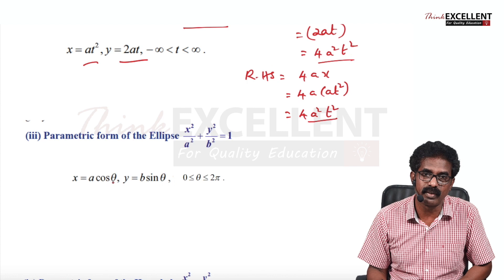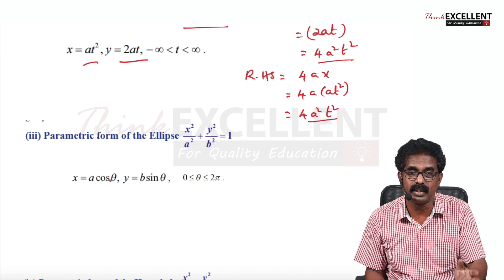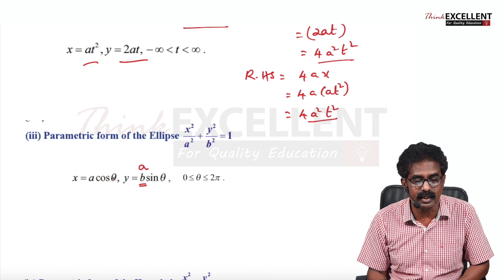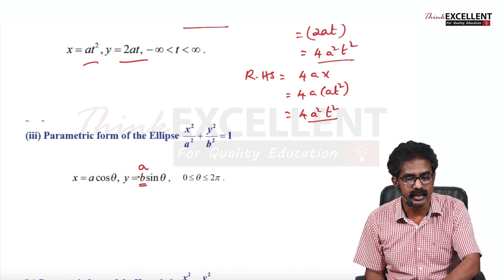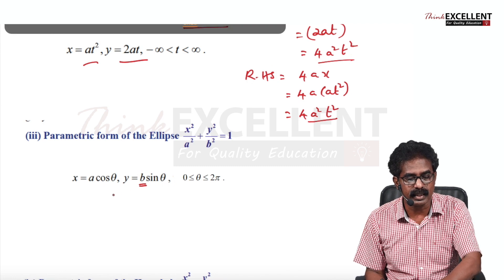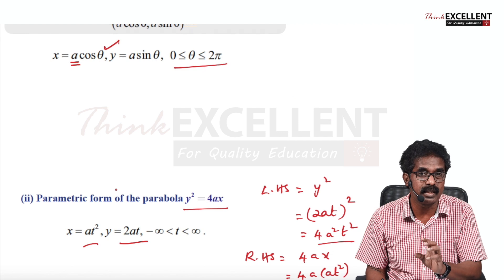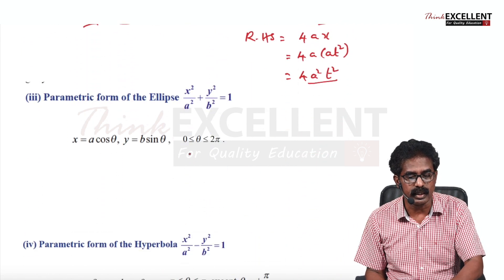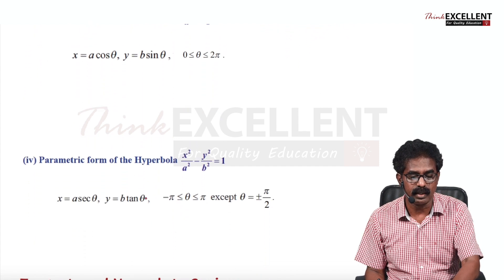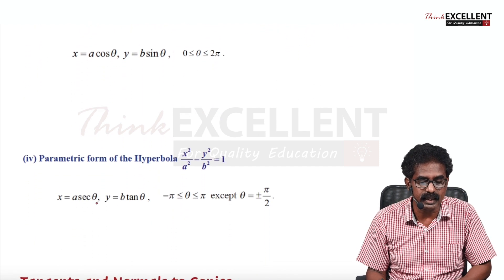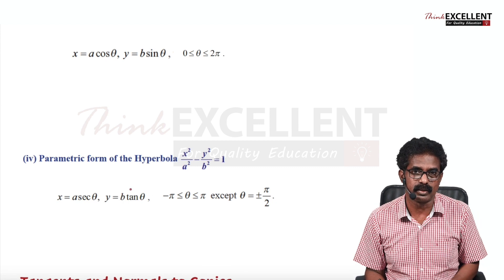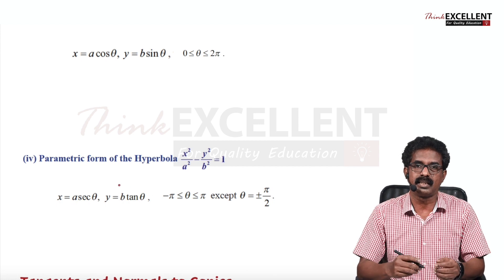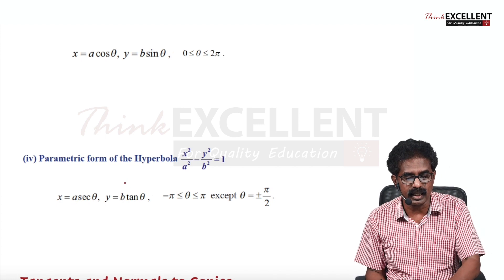Ellipse is a special case — when A equals B, it becomes a circle. For ellipse, the parametric equations are X = Acosθ and Y = Bsinθ, where θ is the parameter (θ lies between 0 and 2π) and A, B are constants. For hyperbola, X = Asecθ and Y = Btanθ, where θ is the parameter. So only for parabola do we use T; for ellipse, circle, and hyperbola, θ is the parameter.